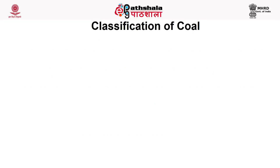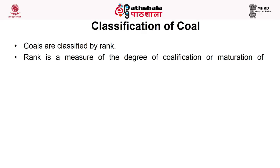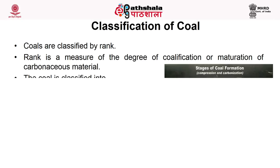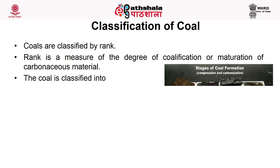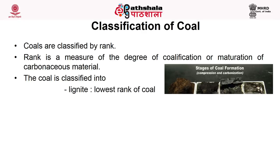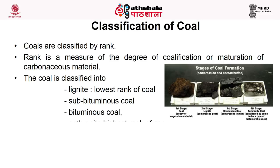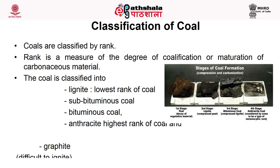The classification of coal: coals are generally classified by rank. Rank is a measure of the degree of coalification or maturation of carbonaceous material. It is classified into lignite, sub-bituminous coal, bituminous coal and anthracite. The highest grade, which has more carbon, is known as graphite, but it does not come under the type of coal. The four types of coal are lignite, sub-bituminous, bituminous and anthracite.